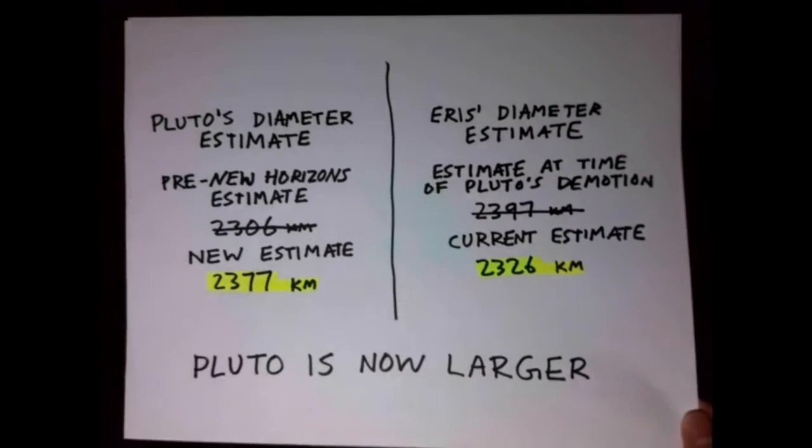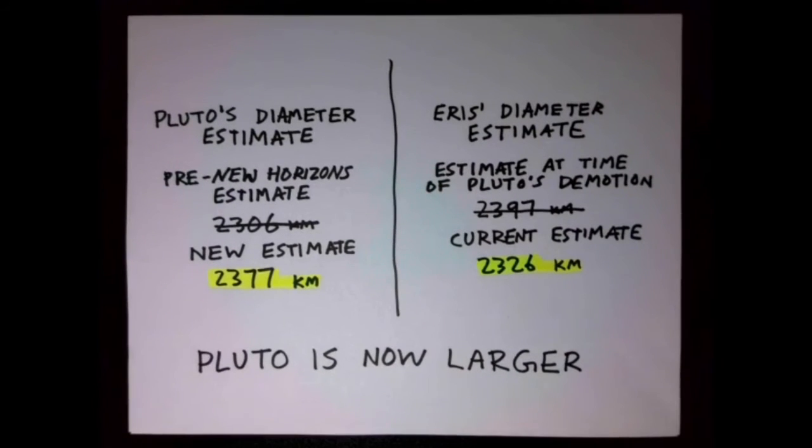And why is this significant? Because if you recall, a big motivating force for formalizing a new definition of planet that would ditch Pluto from the club was the discovery of Eris, a trans-Neptunian object larger than Pluto. And this upward correction of Pluto's size meant that Pluto was actually larger than our current estimate for Eris's size. By volume, at least, Eris is still expected to be larger by mass.